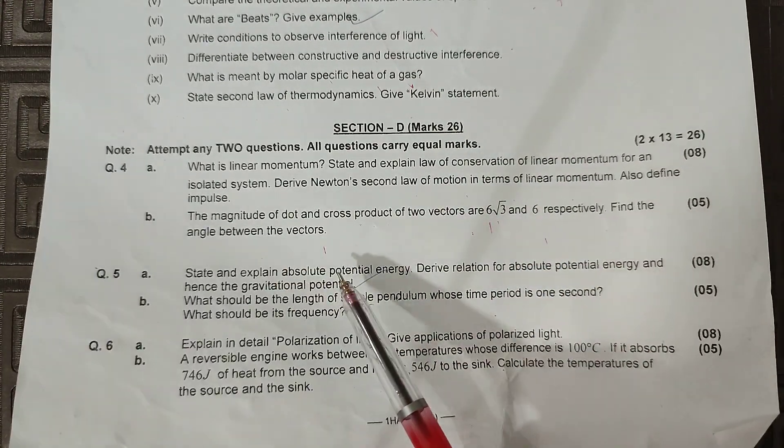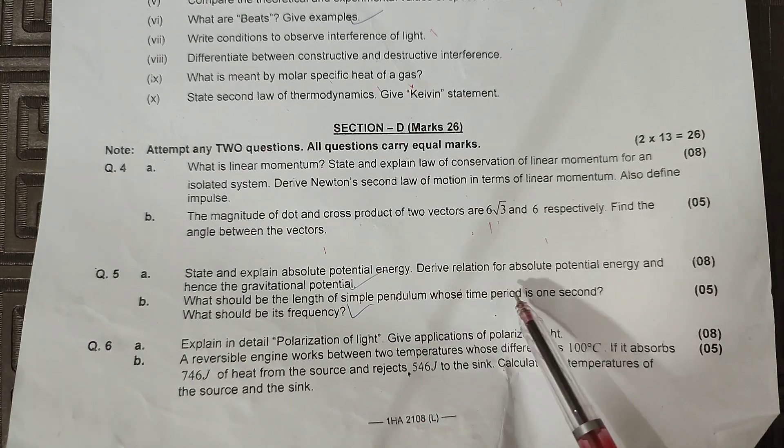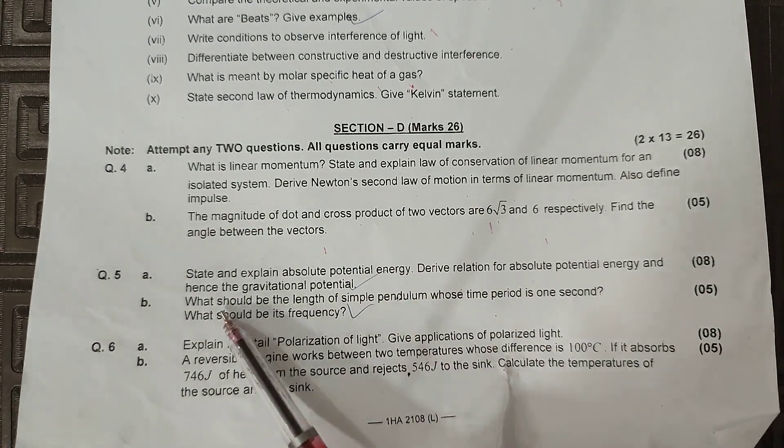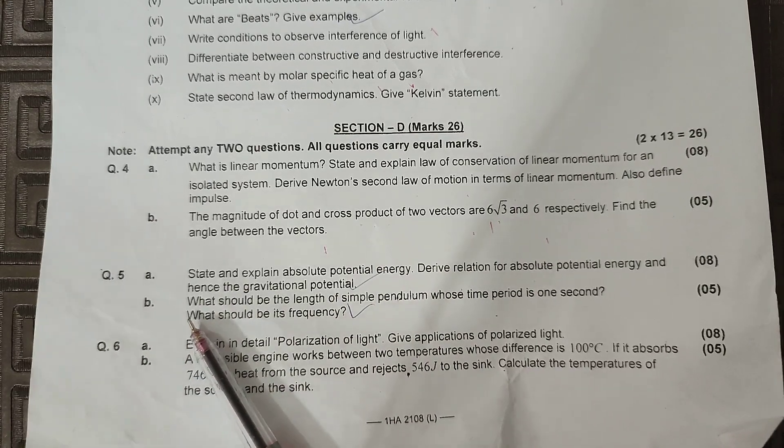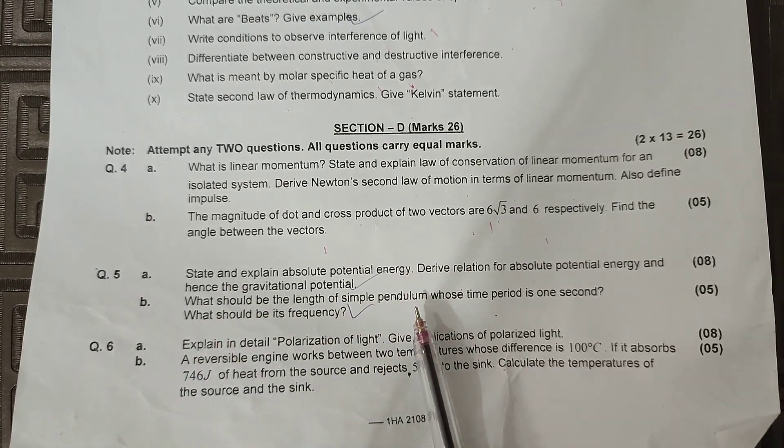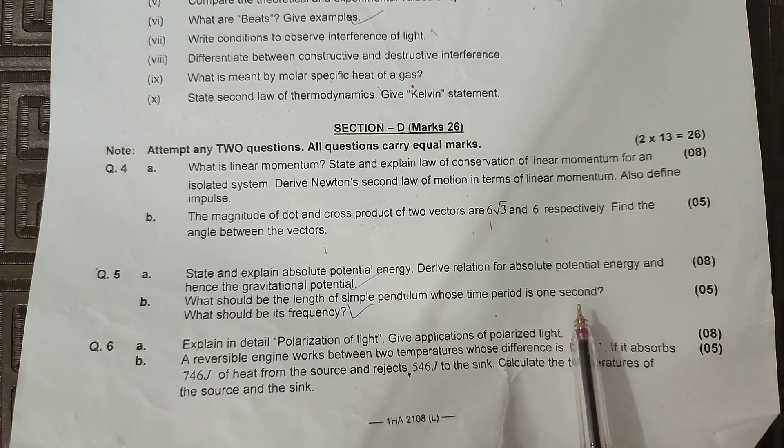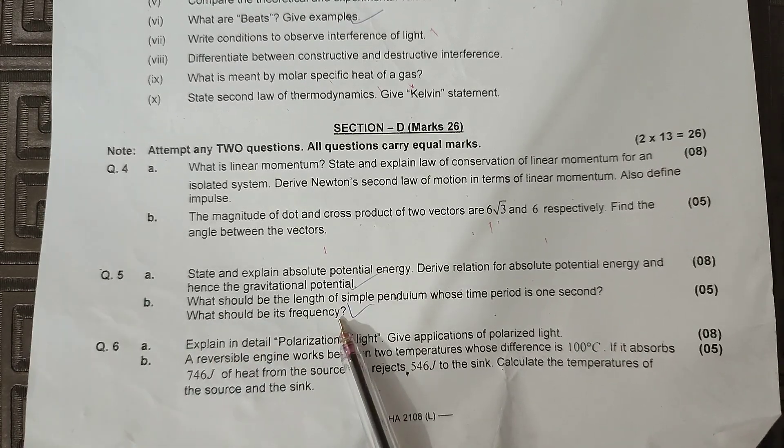State and explain absolute potential energy. Derive relation for absolute potential energy and hence the gravitational potential. Uske baad hai: What should be the length of a simple pendulum whose time period is 1 second? What should be its frequency? Thik hai.